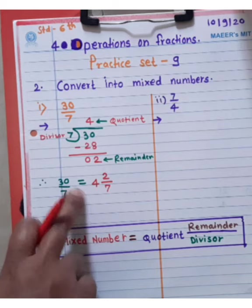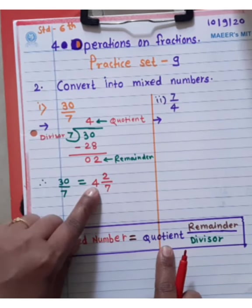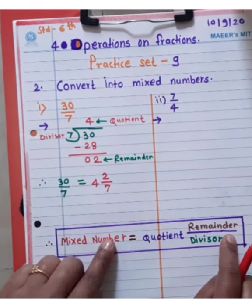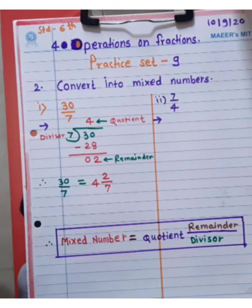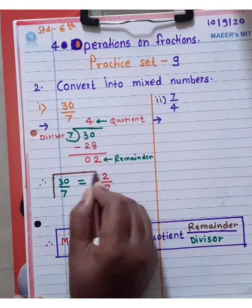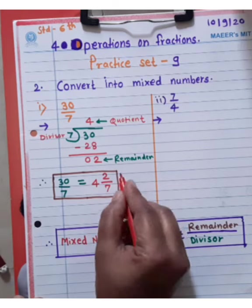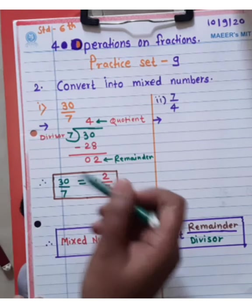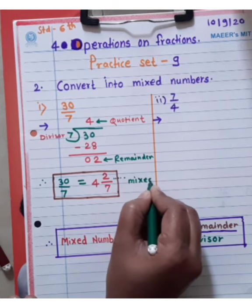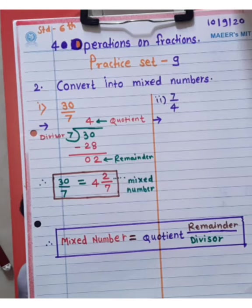The formula is: 30 by 7 is equal to quotient 4, then remainder 2, and then divisor 7. So 30 divided by 7 equals 4 and 2/7. This is the mixed number. Do you understand student?